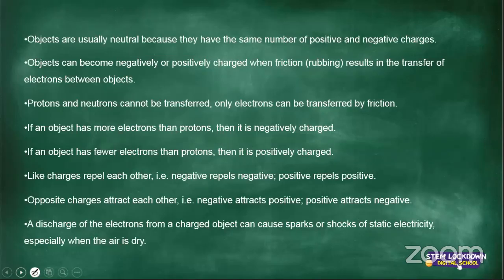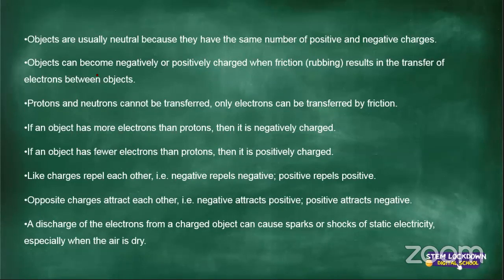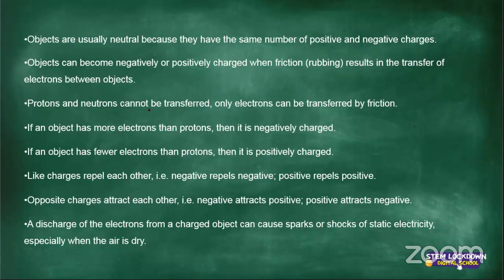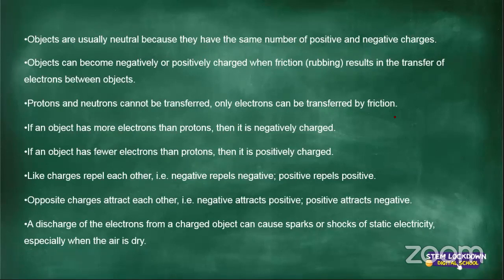Objects are neutral because they have equal positive and negative charges. Objects can become negatively or positively charged through friction — the rubbing that transfers electrons. Protons and neutrons cannot be transferred — they remain in the nucleus. Only electrons are transferred by friction.